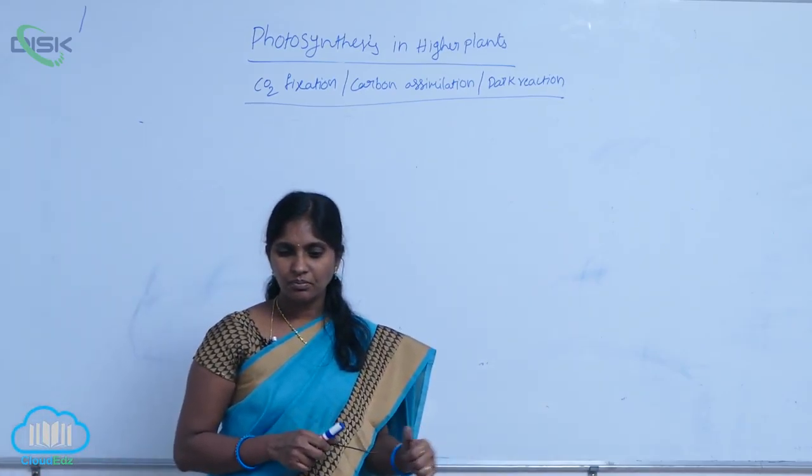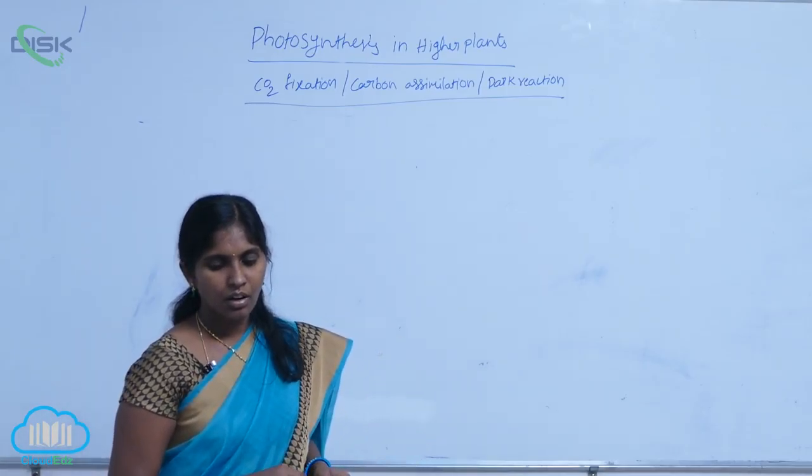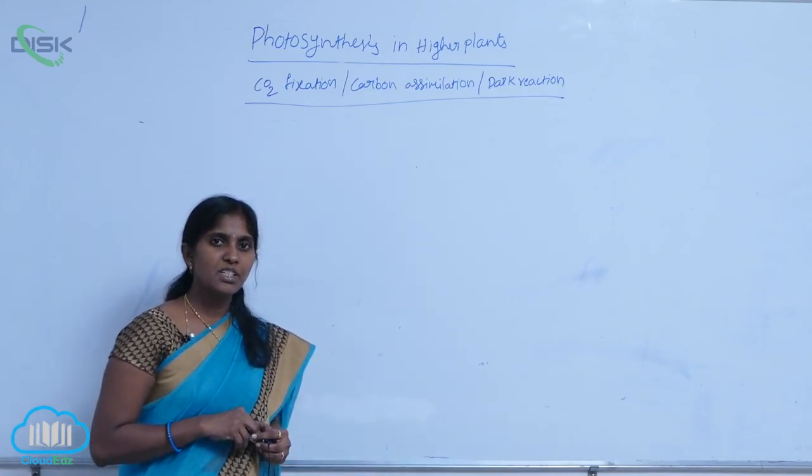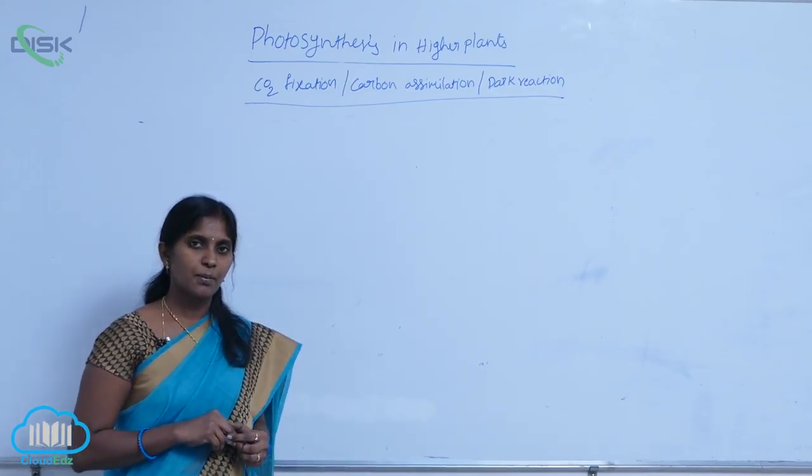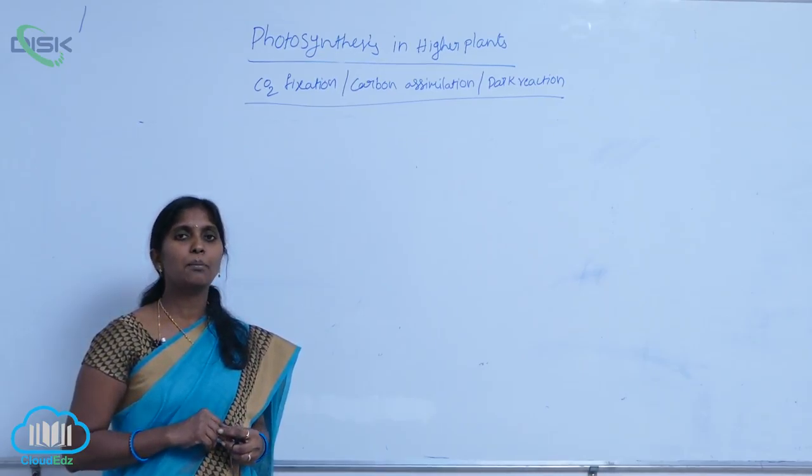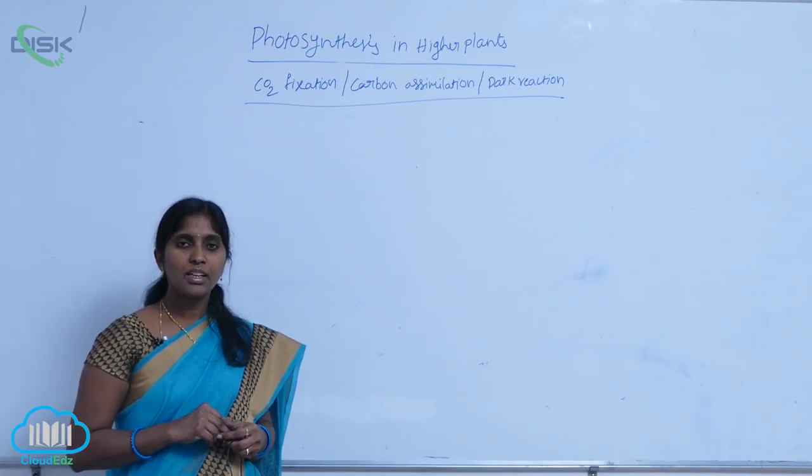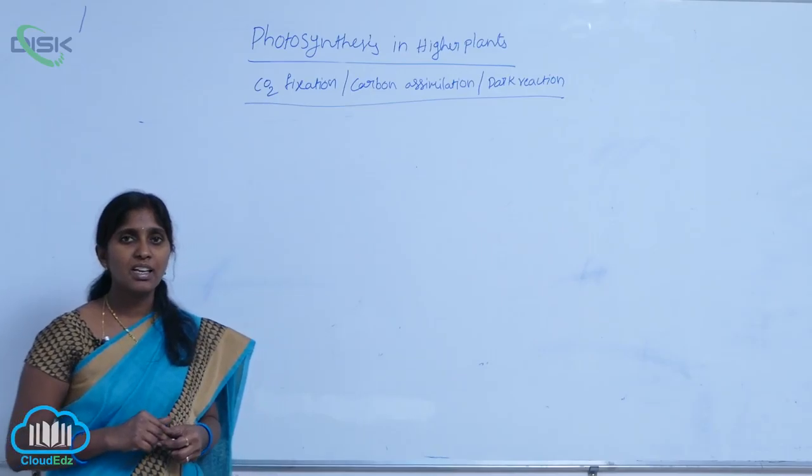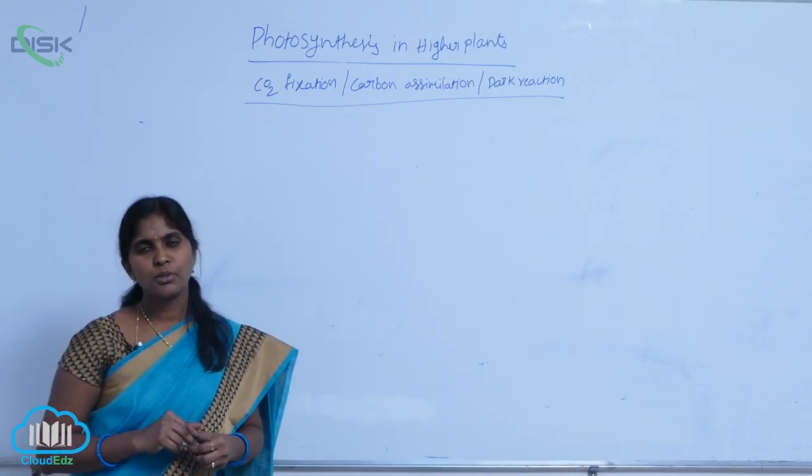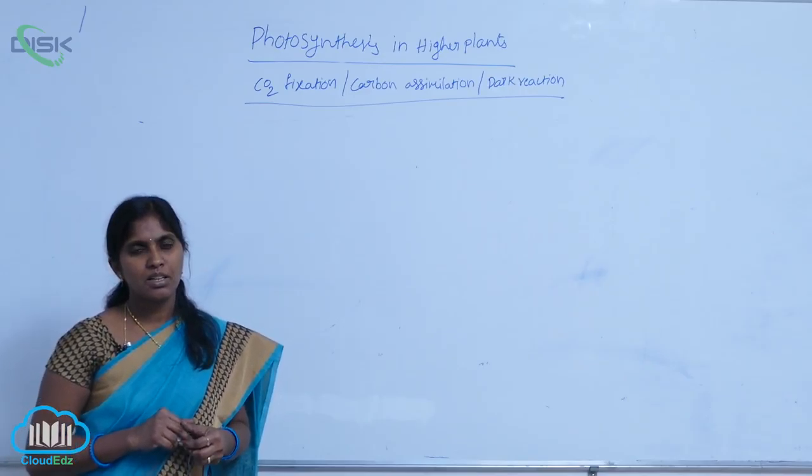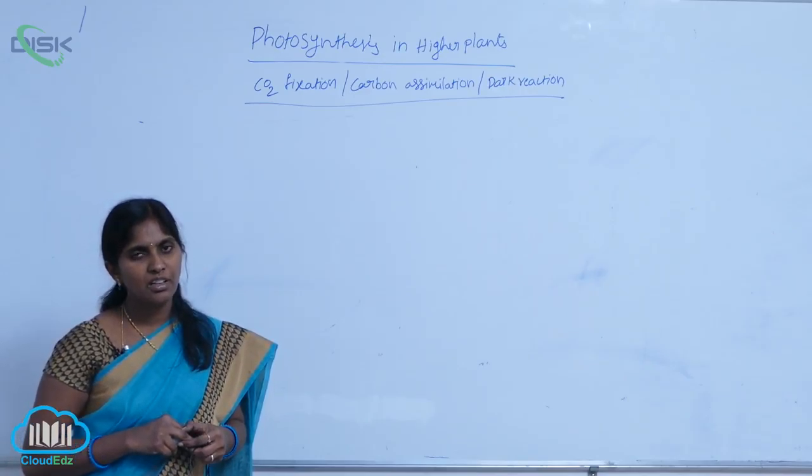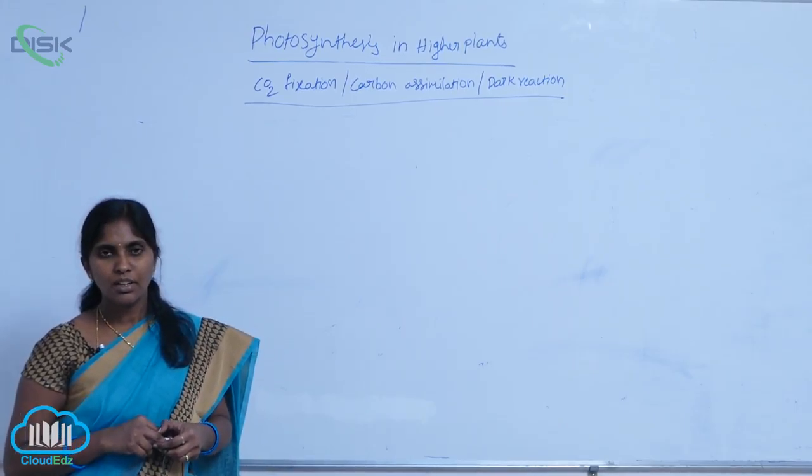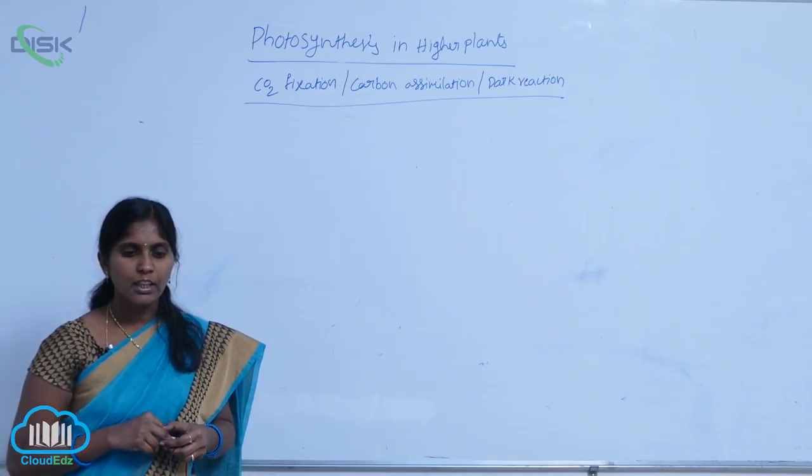Why is it called the C3 cycle? During carbon fixation in higher plants, the first stable compound formed is PGA, which consists of three carbon molecules. Hence the cycle is called the C3 cycle. It is also called the Calvin cycle because the steps were provided by scientist Melvin Calvin.